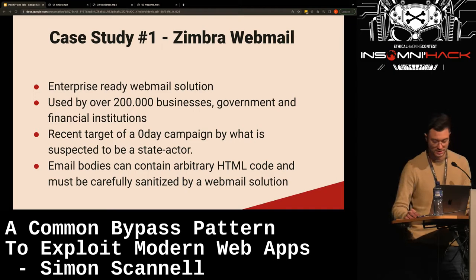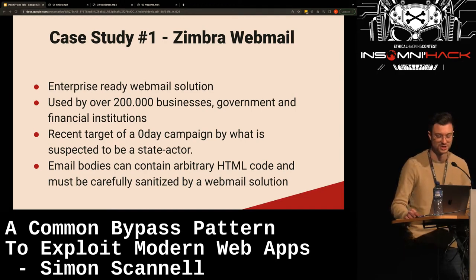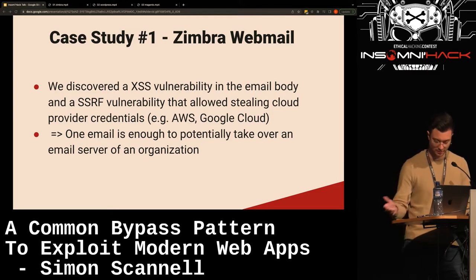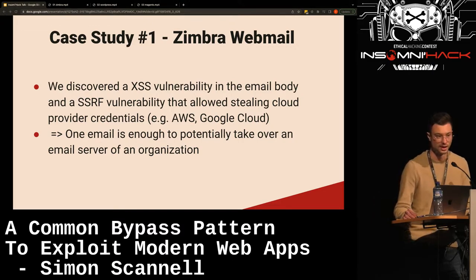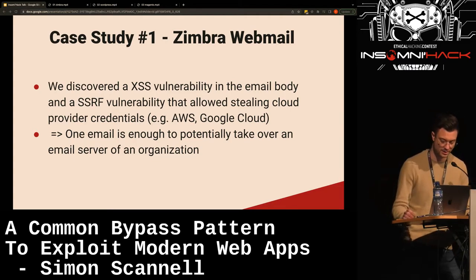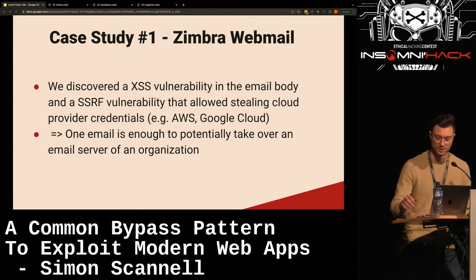Email bodies can contain arbitrary HTML code and must be carefully sanitized — there's a lot that can go wrong here, so we chose it as an interesting target. We discovered an XSS vulnerability in the email body and an SSRF vulnerability that allowed stealing cloud provider credentials, for example from AWS or even Google Cloud. With the SSRF, you could send arbitrary headers, meaning you could even steal Google Cloud tokens. One email is enough to potentially take over an email server of an organization — someone just needs to click it.